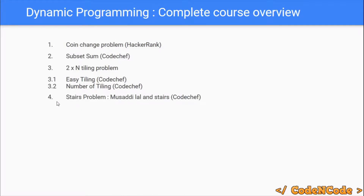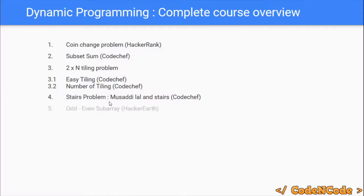After that we'll be going for the stairs problem. You are standing on the 0th stair, and in one step you can move one or two steps ahead. You have to reach the Nth stair and tell how many ways you can reach from 0 to the Nth stair. We would be taking problems from CodeChef and also solving an easy subarray problem from HackerEarth, which is an application of modulo arithmetic and easy DP.